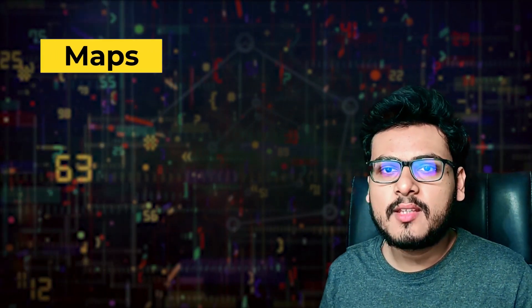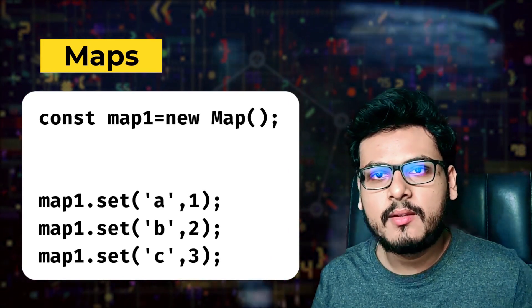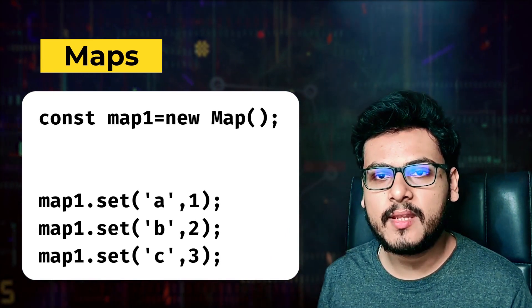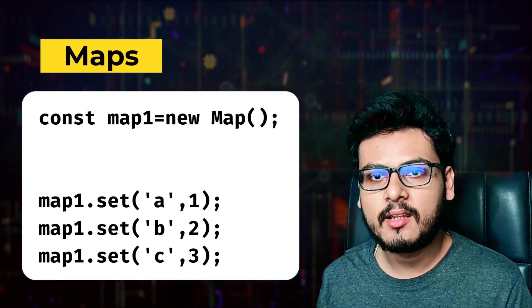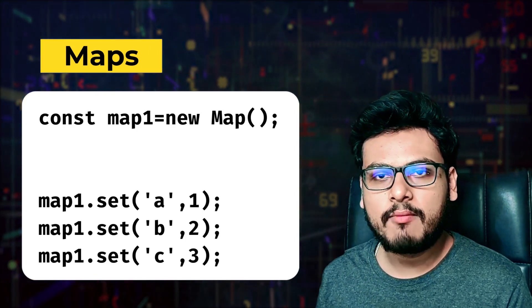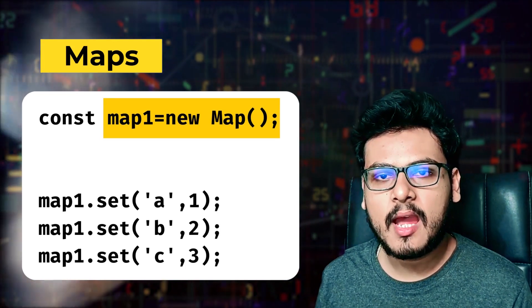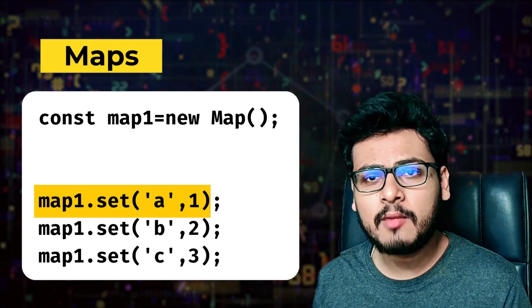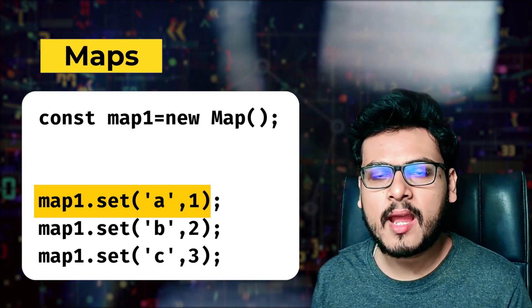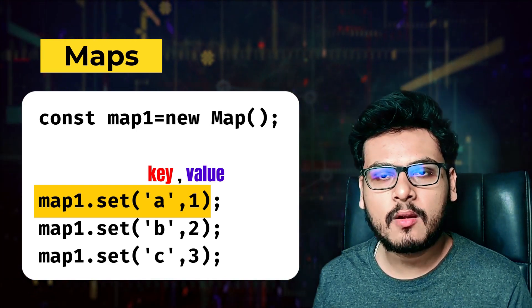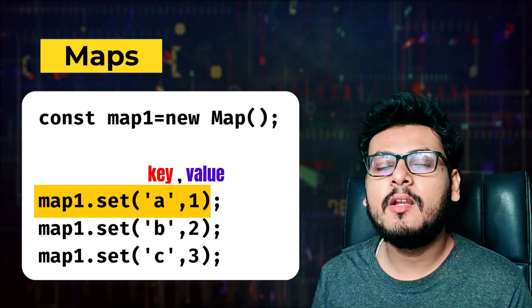Maps in JavaScript are instances of objects but they are much more than that. Let us see how we can create a map. Have a look at this example: `const map1 = new Map()`, then `map1.set('a', 1)`, `map1.set('b', 2)`, `map1.set('c', 3)`. In order to create a map, you initiate a variable with `new Map()`, and then use the `set()` function, passing a key and value as arguments.